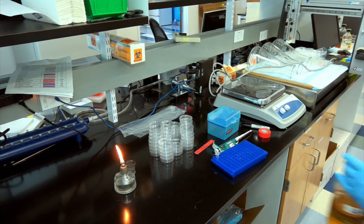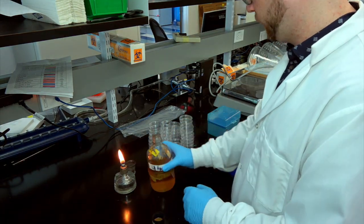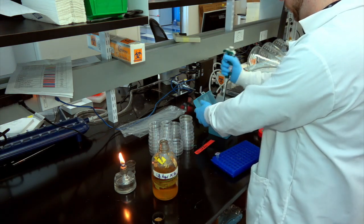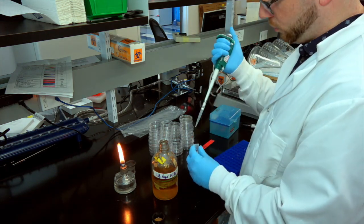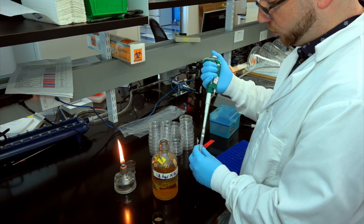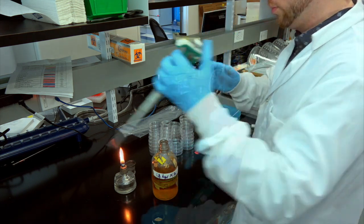To begin the plate pouring process, we light the flame at our gel pouring station and dilute our antibiotic into the 60 degrees Celsius agar mix. We're adding 220 microliters because we're diluting our antibiotic 1 to 1000 into 220 milliliters of agar. Once the antibiotic is added, it's time to start pouring our plates.